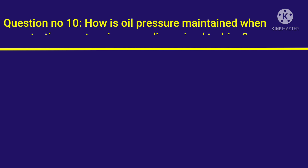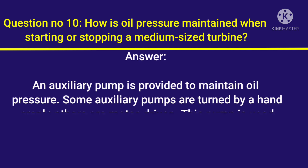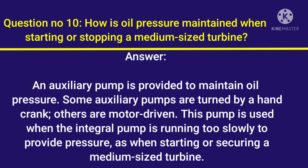Question number 10: How is oil pressure maintained when starting or stopping a medium-sized turbine? Answer: An auxiliary pump is provided to maintain oil pressure. Some auxiliary pumps are turned by a hand crank, others are motor-driven. This pump is used when the integral pump is running too slowly to provide pressure, as when starting or securing a medium-sized turbine.